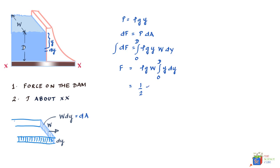Half ρgw d squared. So the total force acting on the dam on account of water can be given as half ρgw d squared.